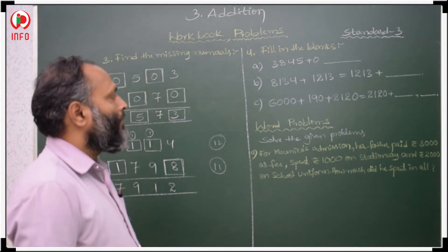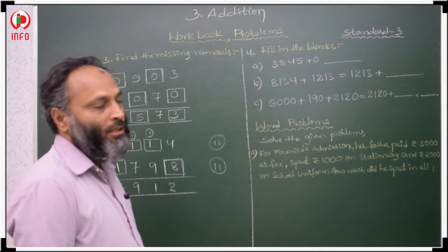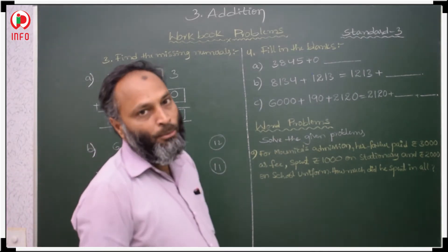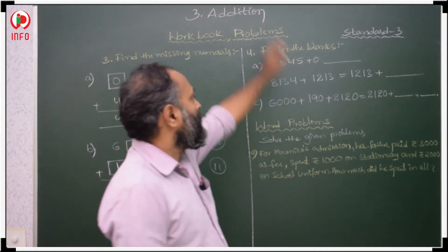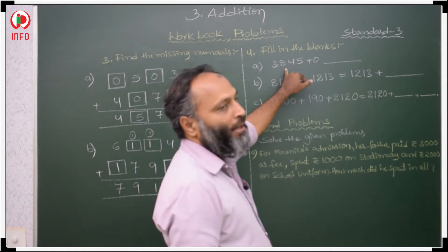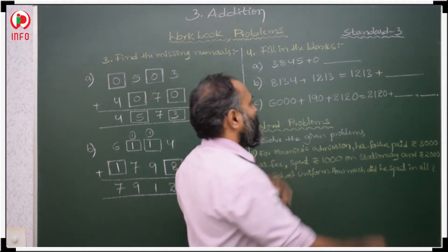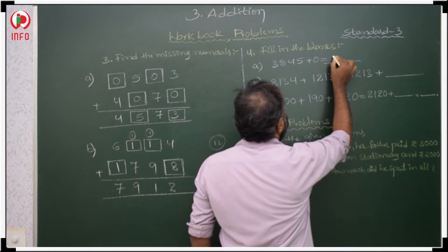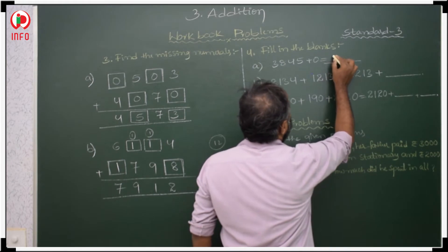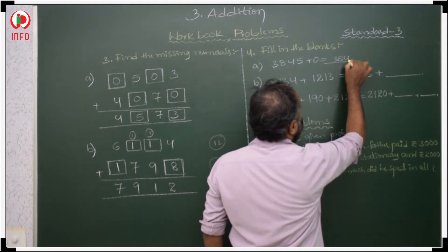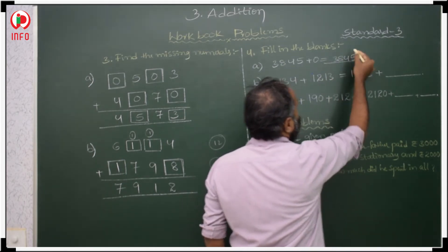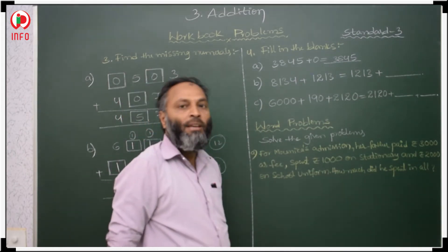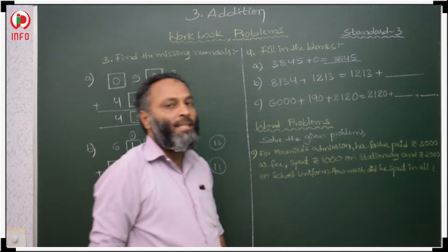Now the fourth question. This question is based on addition properties. If 0 is added to any number, then we will get the same number. For example, 0 added gives 3845, the same number only.